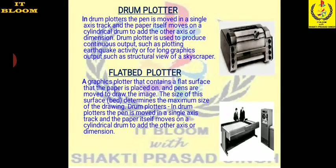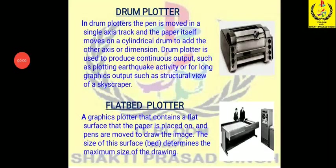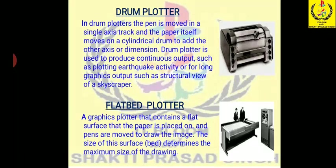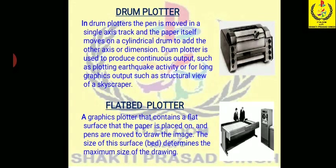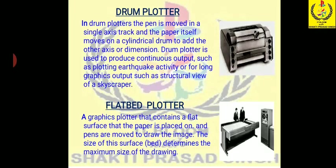A flatbed plotter uses a flat surface, just like a flat bed. Initially the dimensions of the page are maximized, then the pen is placed on the surface and draws graphics on the page. The page dimensions in a flatbed plotter are bigger than the drum plotter — it is wider, and more extensive plotting can be done with the flatbed plotter.